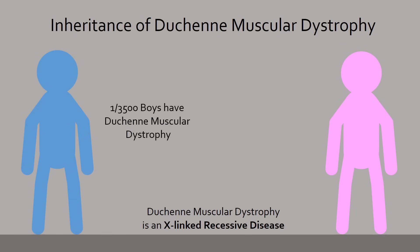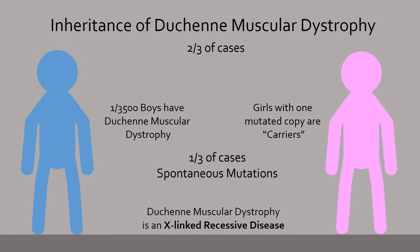Approximately 1 in 3,500 boys have this disease. Females who carry a copy of a defective dystrophin gene are known as carriers; despite not being affected by the disease, they have a 50% chance of passing down the defective gene to their children. Interestingly, inheritance only explains two-thirds of DMD cases. The remaining one-third have parents who are neither affected nor carriers, because their random mutation in the dystrophin gene is harmful.